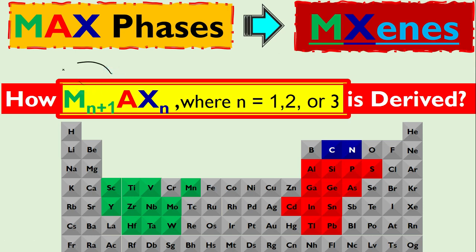Let me show you how this formula is derived. We know this is basically the MAX formula and we get MXene structures from MAX phases. This MAX phase is basically the combination of three different layers: the M atoms layer, the A atoms layer, and the X atoms layer.